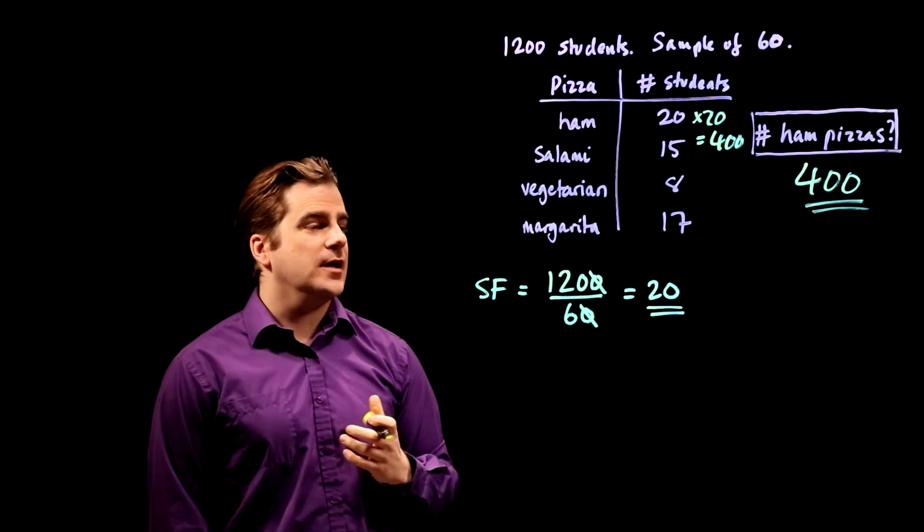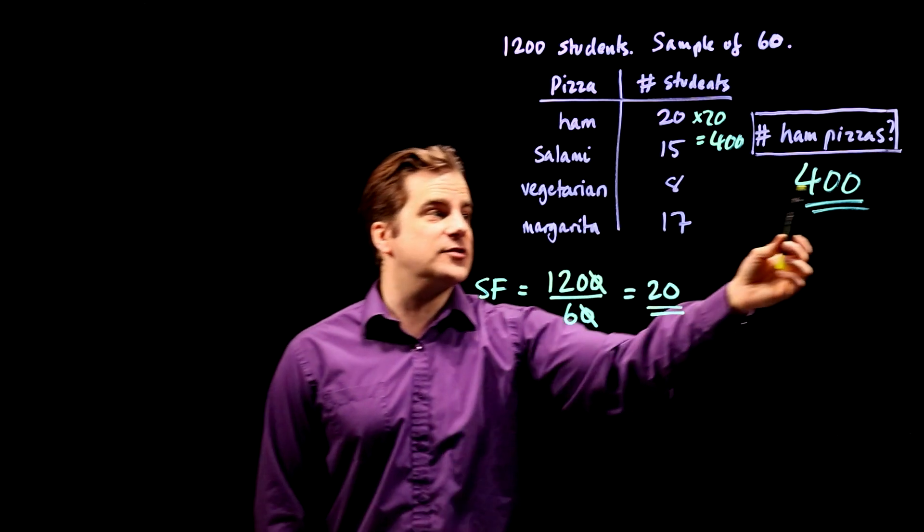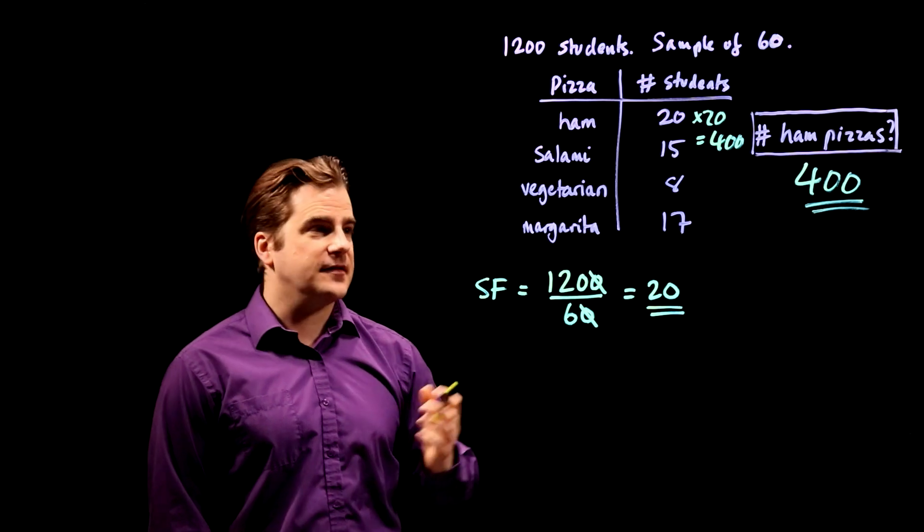It's as simple as that. Just work out the scale factor, then multiply the sample number by that to get the actual number that should be ordered. That's it.